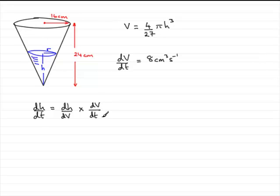Now, we have dV/dt. It's 8. That's good. What we need now is dh/dV.